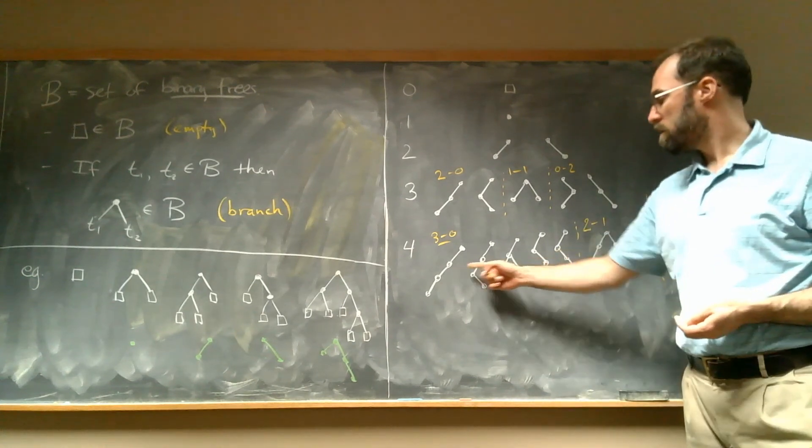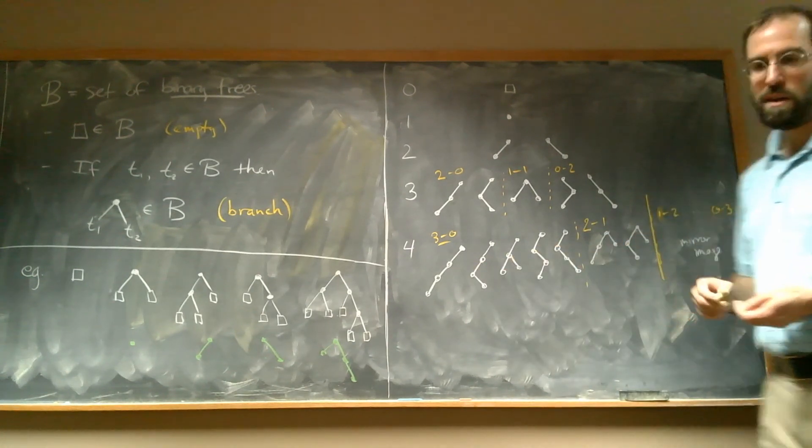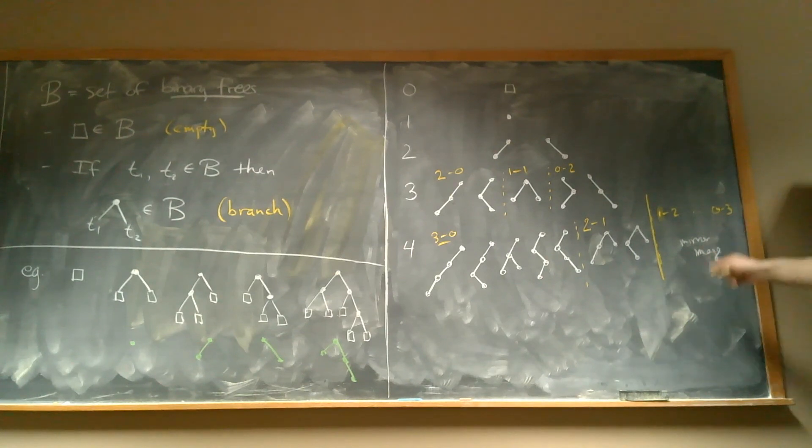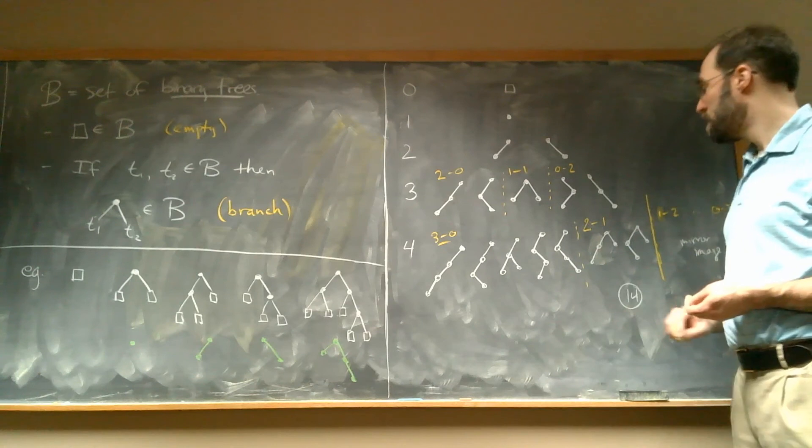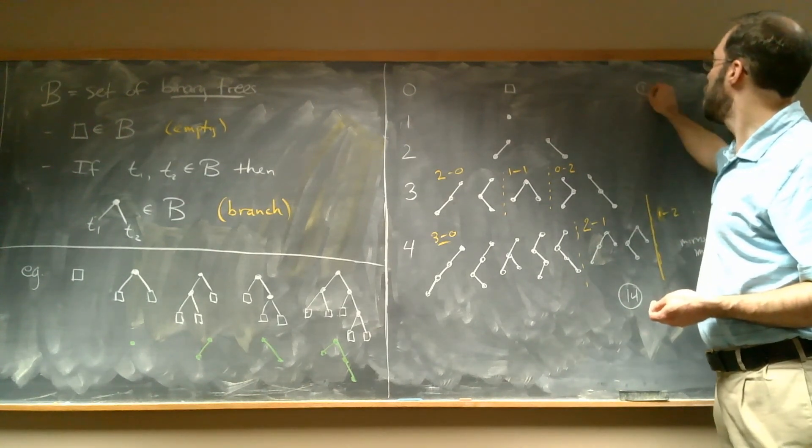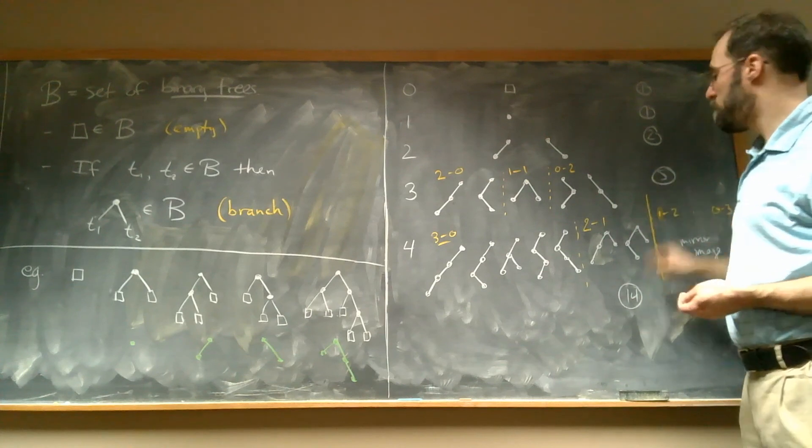So let's count. One, two, three, four, five, plus two is seven. And then the mirror image is over here, so we'll get fourteen in total. So there's one here, one here, two here, five here, and fourteen here.